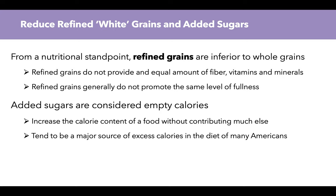Recommendation two: reduce refined white grains and added sugars. From a nutritional standpoint, refined grains are inferior to whole grains — they don't provide equal amounts of fiber, vitamins, and minerals, and they generally do not promote the same level of fullness, so you don't stay satisfied as long. Added sugars are problematic because they're considered empty calories — providing significant energy but not a sufficient quantity or diversity of beneficial nutrients. This is a major source of excess calories in American diets, found through beverages like fruit juice and soda, and in many sauces and seasonings.